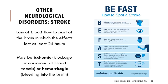Strokes happen when you have a loss of blood flow to part of the brain, with effects lasting at least 24 hours. It can be ischemic - blood vessels blocked or narrowed - or hemorrhagic - damage to blood vessels resulting in bleeding into the brain. You can spot a stroke using the BeFAST protocol: Balance, Eyes/vision, Face drooping (ask them to smile), Arms (can they keep them steady), Speech (have them repeat basic phrases), and Time - act quickly.